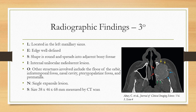Moving on to radiographic findings of tertiary hyperparathyroidism. Tertiary hyperparathyroidism usually presents radiographically similar to advanced secondary hyperparathyroidism. However, the characteristic findings are not always what appear clinically, leaving room for alternative findings. We referenced a case report from the Journal of Clinical Imaging Science where a 59-year-old man presented with a brown tumor located in the left maxillary sinus. The edge is well-defined, the shape is round and spreads into adjacent bony fossa, and the internal structure is a unilocular radiolucent lesion. Other structures involved include the floor of the orbit, infratemporal fossa, nasal cavity, pterygopalatine fossa, and pre-maxilla. This is a single expansile lesion with a size of 38 by 46 by 68 millimeters, measured by CT scan.